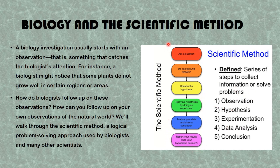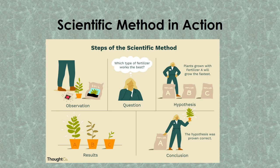We have natural science, biological science, chemical science, physical science, and so on. The steps of the scientific method may differ slightly depending on the discipline you are dealing with, but they generally have the same results. The steps are: ask a question, do background research, construct a hypothesis, test your hypothesis by doing an experiment, analyze your data and draw a conclusion, then report your results.